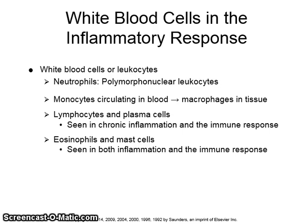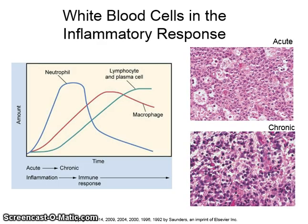White blood cells or leukocytes include neutrophils, also known as polymorphonuclear leukocytes or PMNs, monocytes circulating in blood that are turned into macrophages when they reach the tissue, and lymphocytes and plasma cells, which are seen in chronic inflammation and the immune response. See figures 2-7, 2-8, and 2-9 for more information.